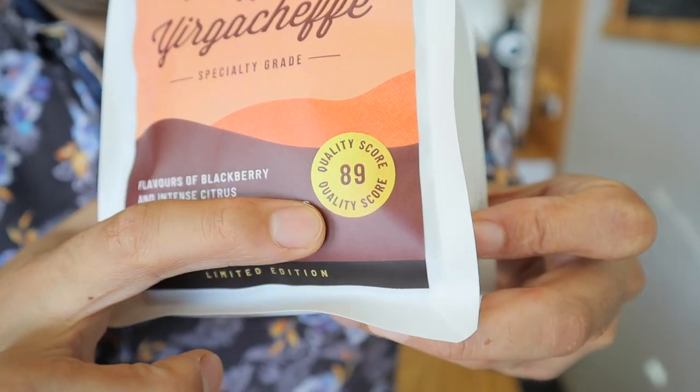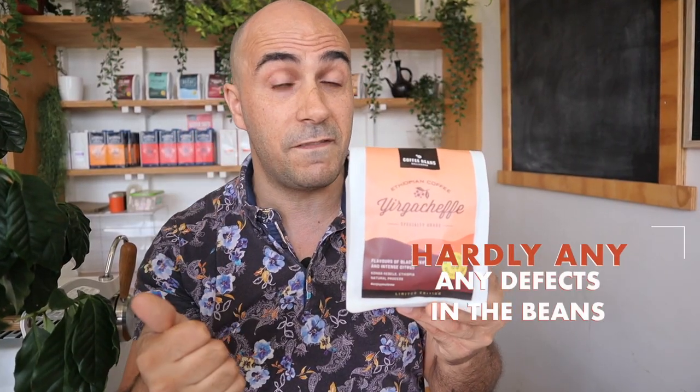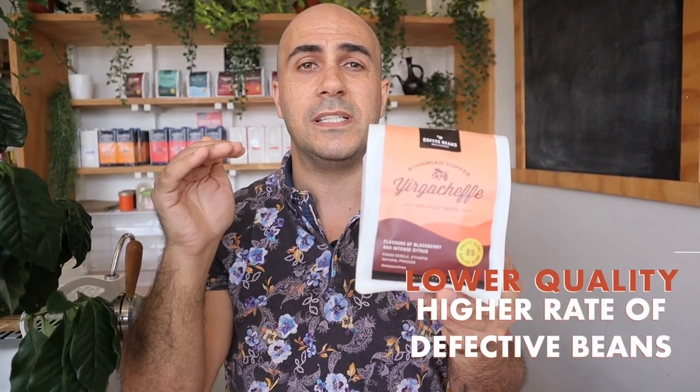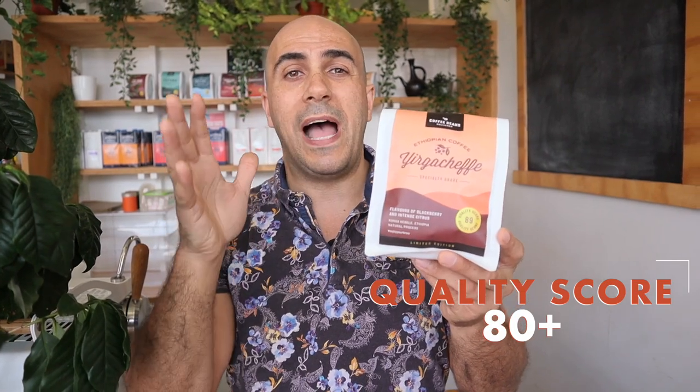This coffee here has an 89 quality score — almost in the 90s, just missing by one point. There are hardly any defects in the beans; they're all the same size, meaning they ferment at the same rate and you get a nice clean finish. You don't get those murky, muddying tastes that come from defective beans. With lower quality coffee there's a higher rate of defective beans, and in 500 grams you might get quite a few that taste like dirty socks and muddy the flavor of the rest. Look for 80-plus, and if you can't find a quality score and your coffee tastes murky, muddy, or bitter, it's probably lower quality.